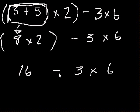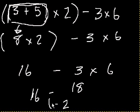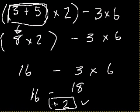So now we have 16 minus 3 times 6. Now what do we do next? Do we do the subtraction first, or do we do the multiplication first? Well, we do the multiplication, because multiplication comes ahead of subtraction. Remember, parentheses first, then multiplication and division, then addition and subtraction. So let's do this next. So we have 16 minus 3 times 6. That's 16 minus 18. 16 minus 18 is minus 2. That's how we did it.